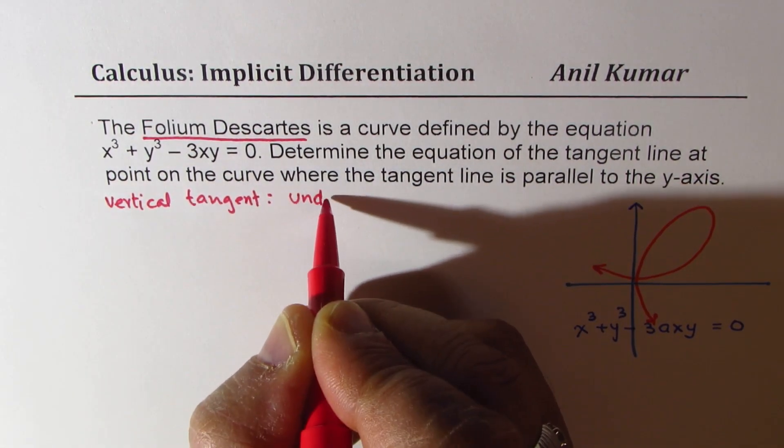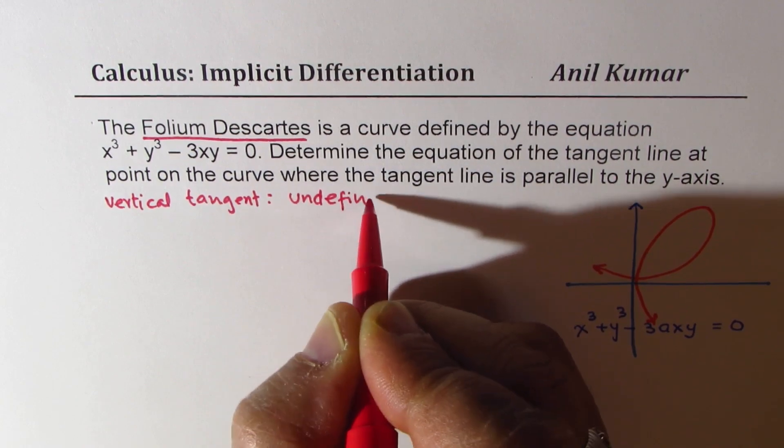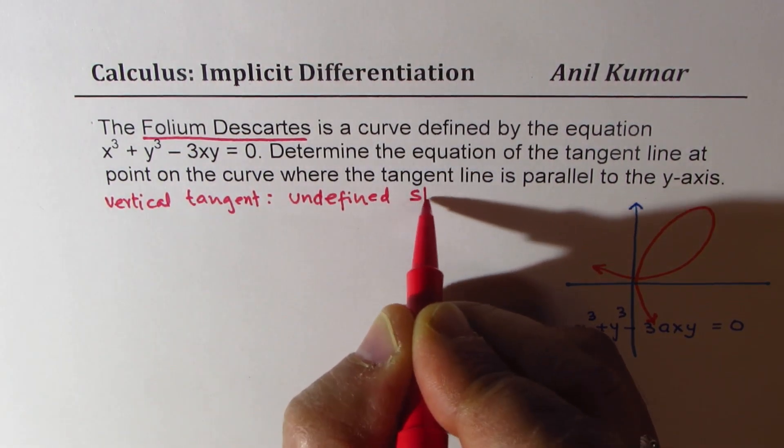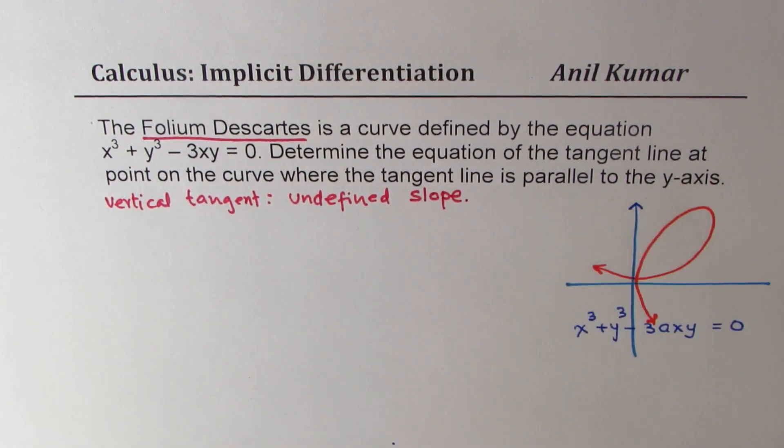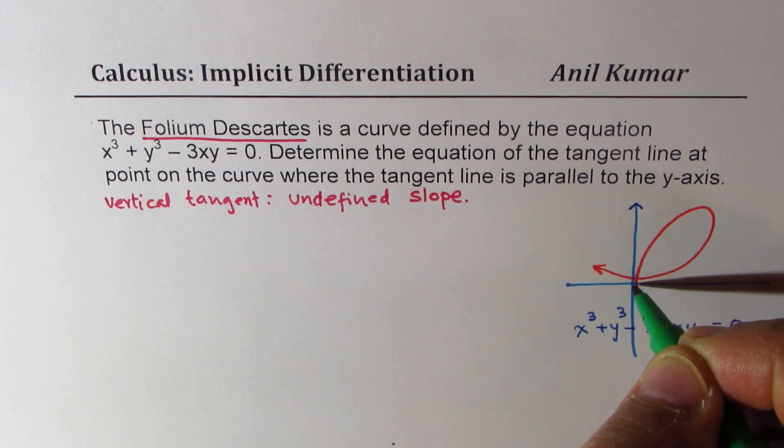That means undefined slope. So I hope the question is absolutely clear. So we could see there are two. One is on this side.